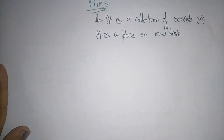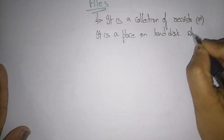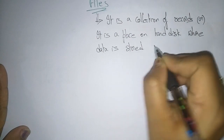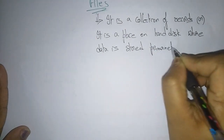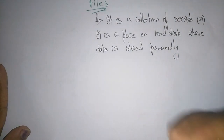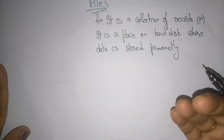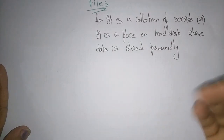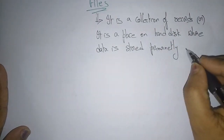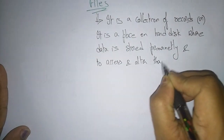The hard disk is one of the secondary memory. In the hard disk, files will be stored in the form of records where data is stored permanently. Whatever data you store on the hard disk in the form of files is records — that data is stored permanently until the user manipulates it. The user has access to alter that information or data whenever necessary.